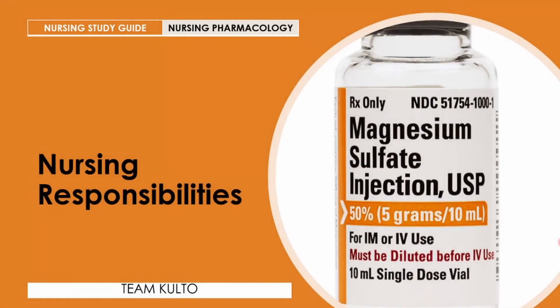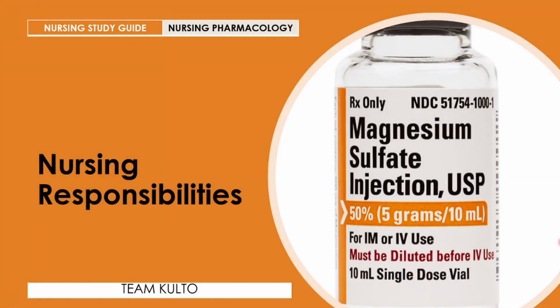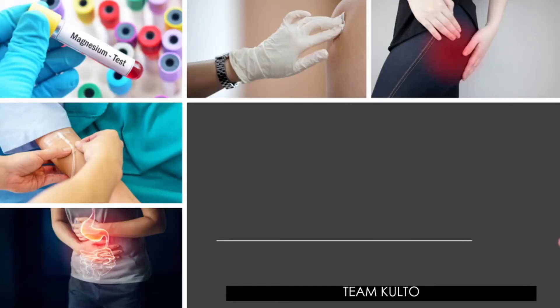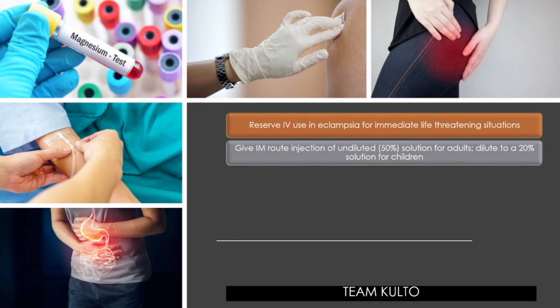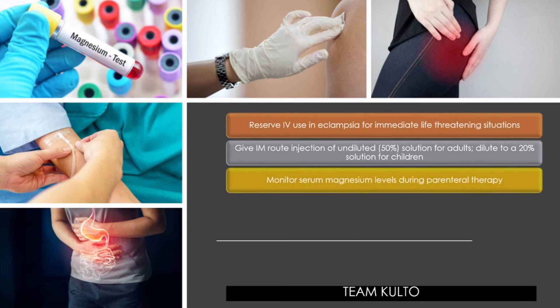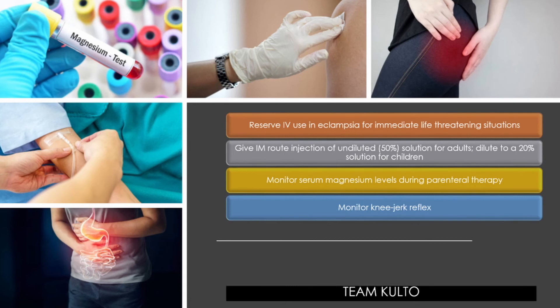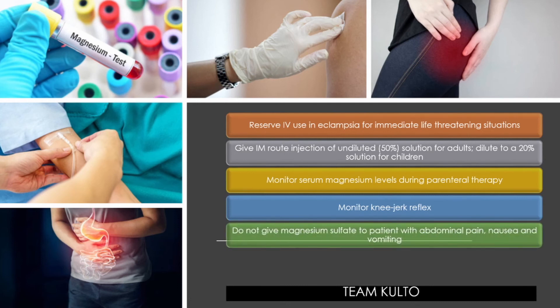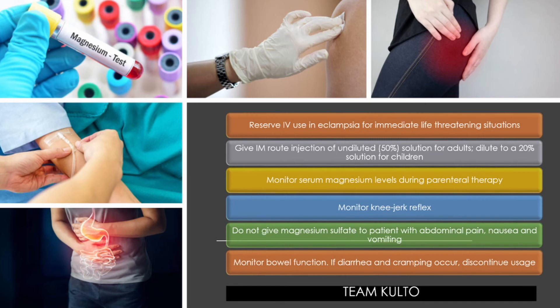What are the nursing responsibilities when administering magnesium sulfate? First, reserve IV use in eclampsia for immediate life-threatening situations. Give IM route as an injection of undiluted 50% solution for adults; dilute to a 20% solution for children. Monitor serum magnesium levels during parenteral therapy. Monitor knee-jerk reflexes. Do not give magnesium sulfate to patients with abdominal pain, as that is one of the contraindications. Monitor bowel function, and if diarrhea and cramping occur, discontinue usage.